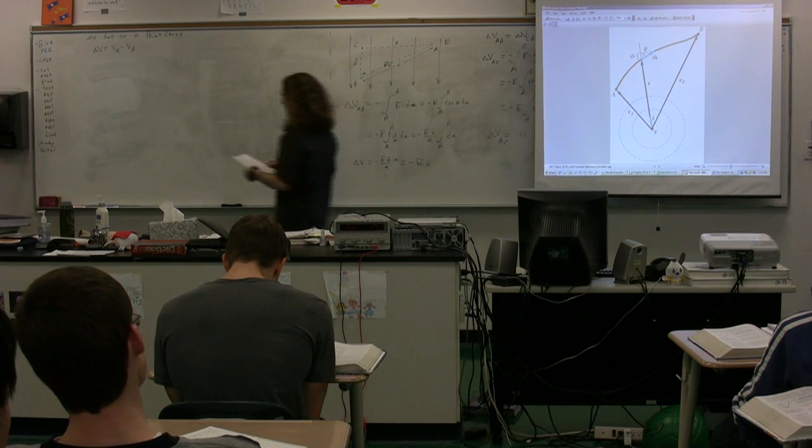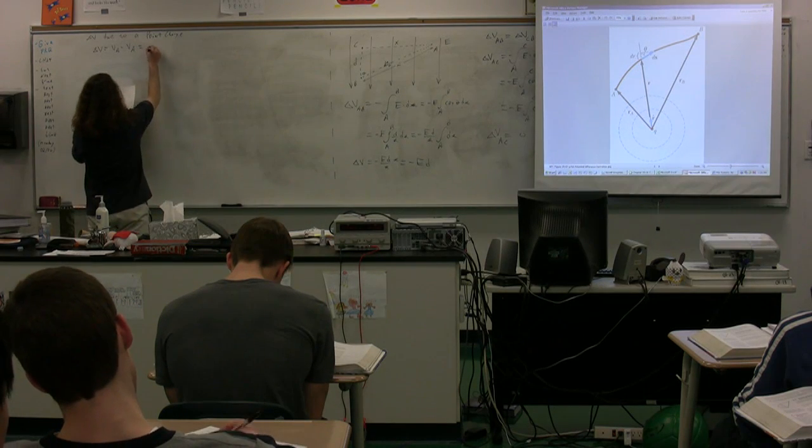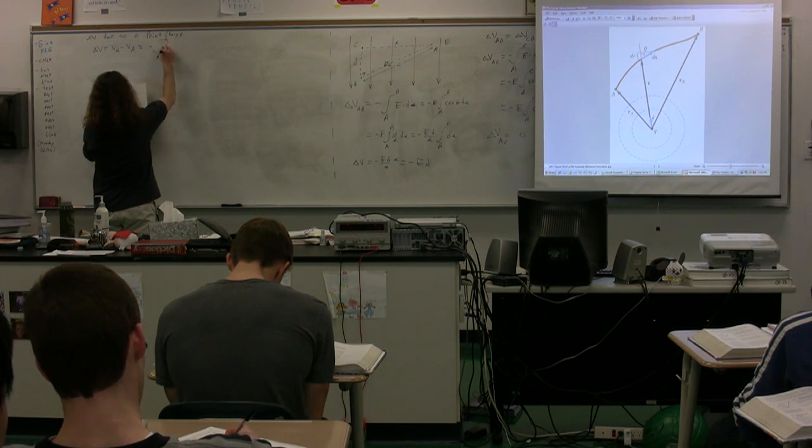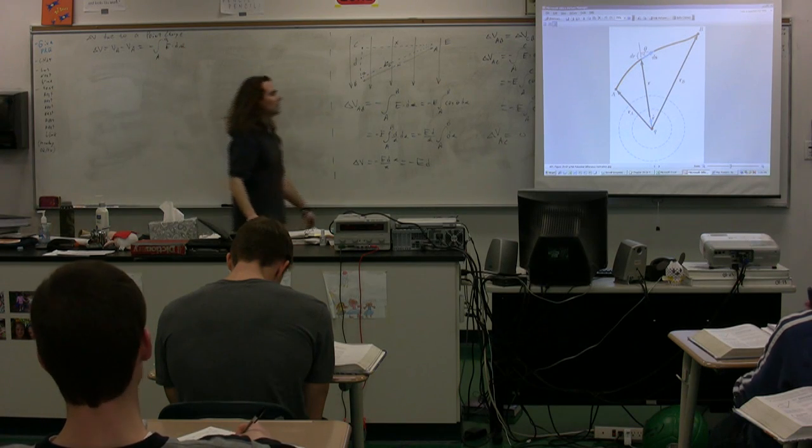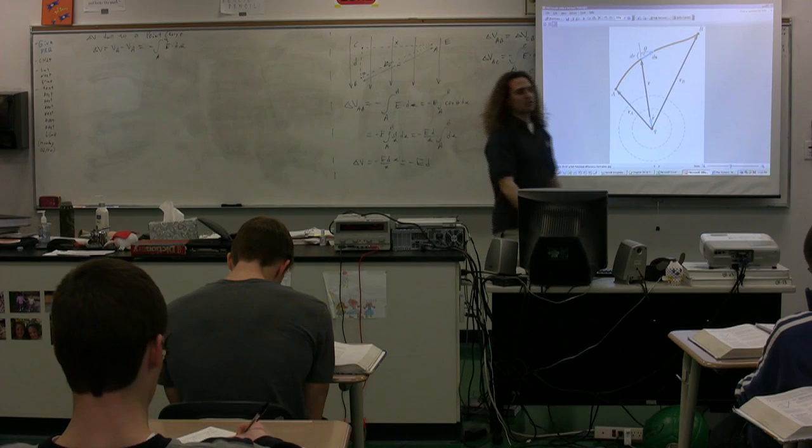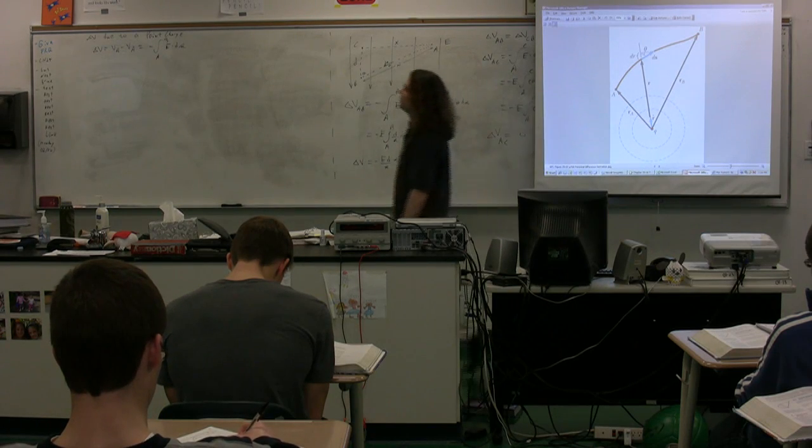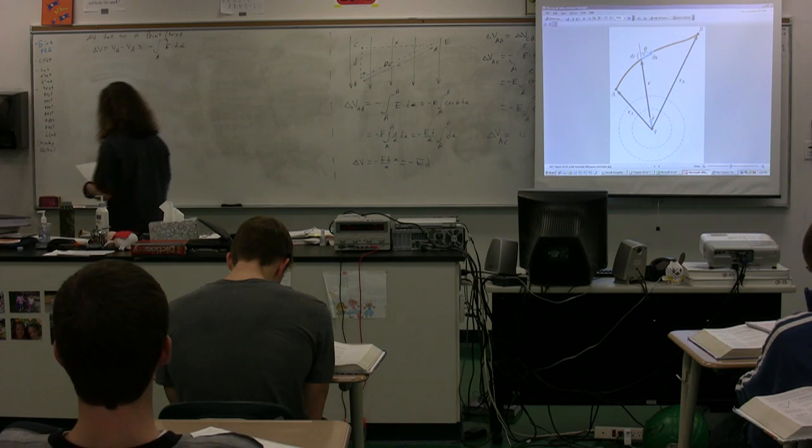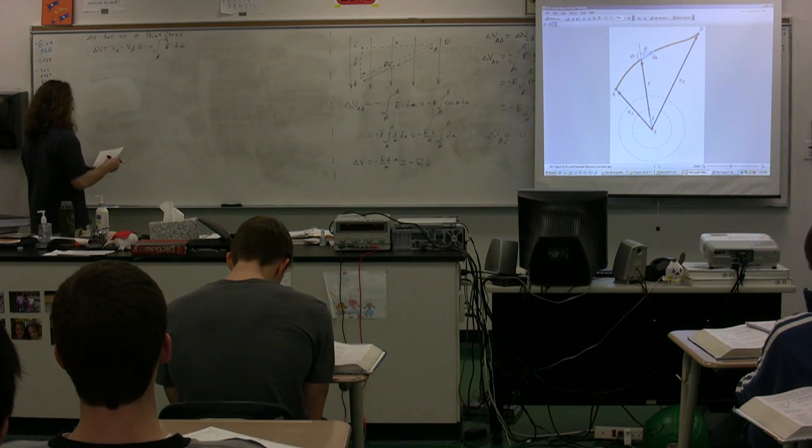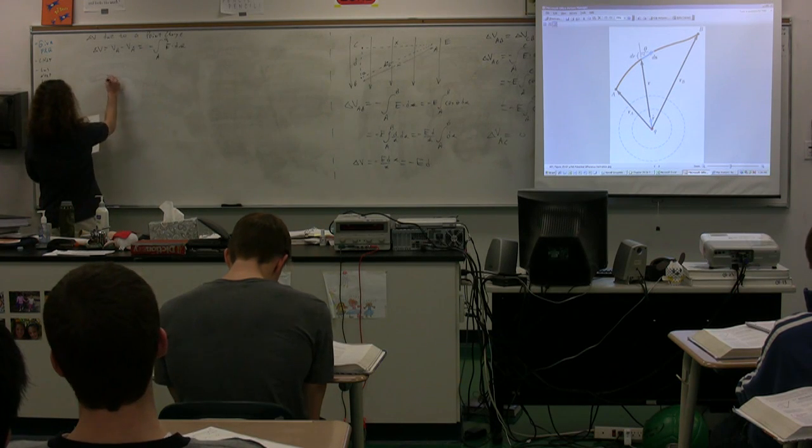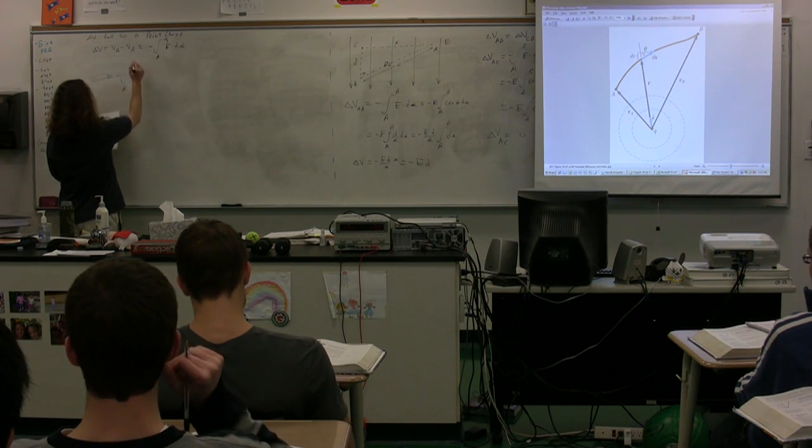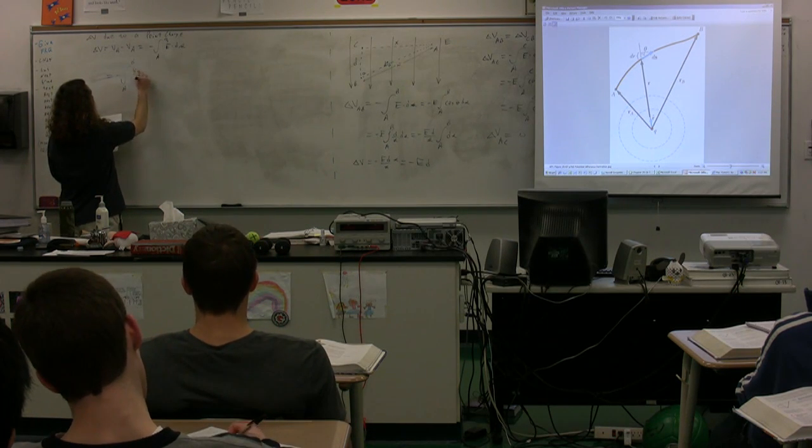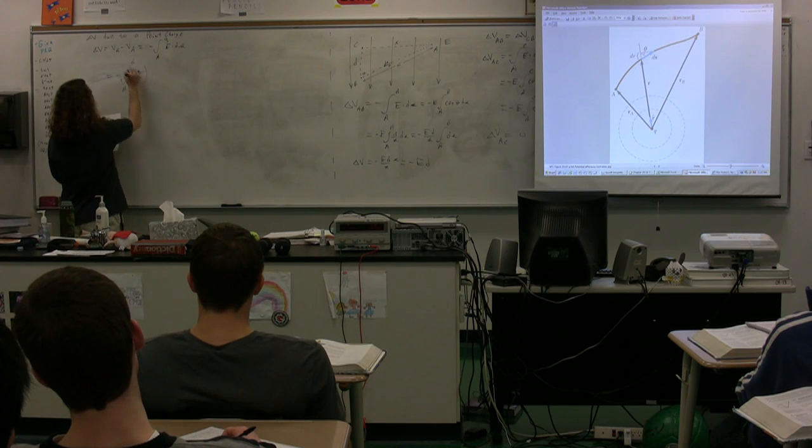We've already worked with this equation. It's equal to the negative of the integral from A to B of E dot ds. This is a point charge, so we already have the equation for the electric field. Hamza, what is that equation? kq over r squared. Kq over r squared. So from A to B, we have kq over r squared for the electric field.